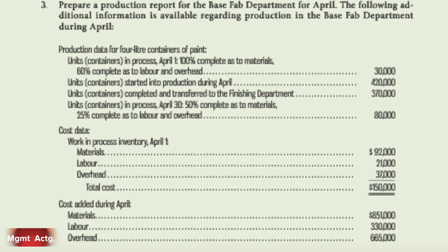We're given production data for containers of paint. Units in process at the beginning of April — we're told what percentage is complete and that we have 30,000 units. Units started: 420,000. Units completed and transferred: 370,000, which leaves 80,000 partially completed units as of April 30th. Then we're given cost data for work in process inventory at the beginning of April, and costs added during April. We do not know the cost of the units transferred or the total cost of the work in process ending inventory — that's the point of the cost reconciliation.